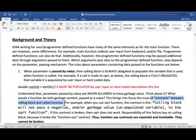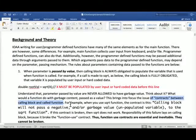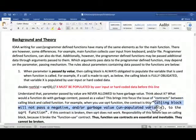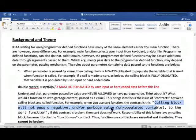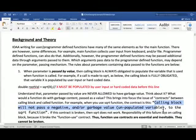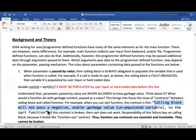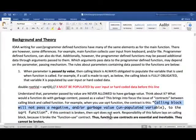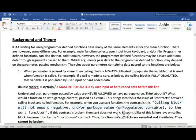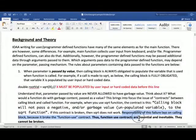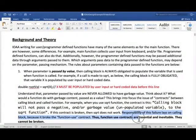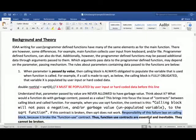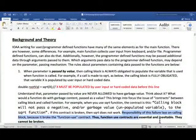This brings into focus the issue of contracts between calling block and called function. Contracts are as good as legal contracts. For example, when you use the sqrt function, the contract is this: the calling block will not pass a negative value and/or a garbage value or unpopulated variable to the sqrt function. If this contract is broken, then sqrt does not work. Responsibility for this failure lays on the calling block because it broke the function use contract. Thus function use contracts are essential and inevitable. They cannot be broken.